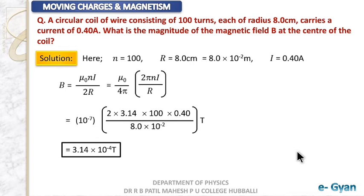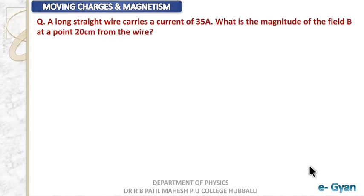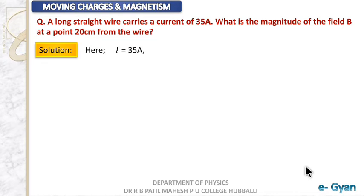This is the value of magnetic field at the center of the coil. Moving to the next question: a long straight wire carries a current of 35 ampere. What is the magnitude of magnetic field at a point 20 centimeters from the wire? We use Ampere's circuital law for a straight wire. Given: I = 35 ampere, and r = 20 centimeter = 20 × 10⁻² meters.